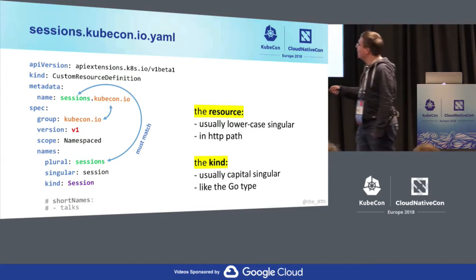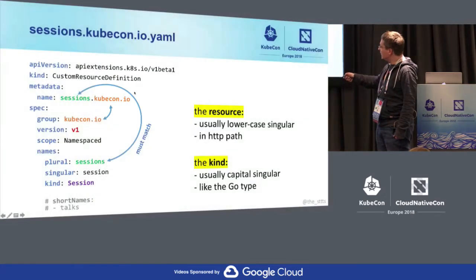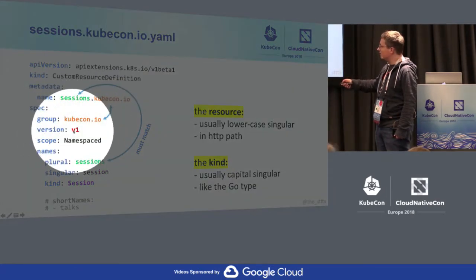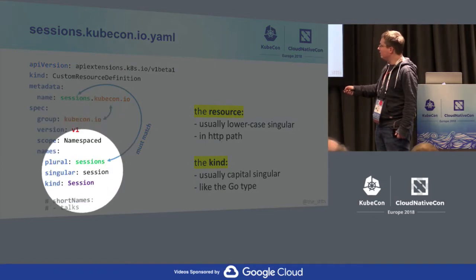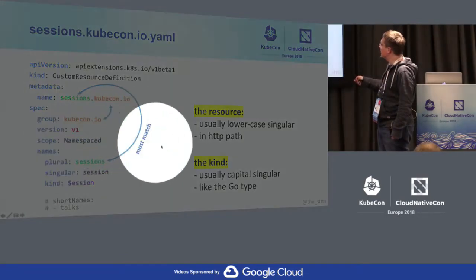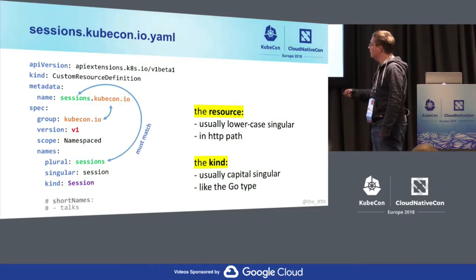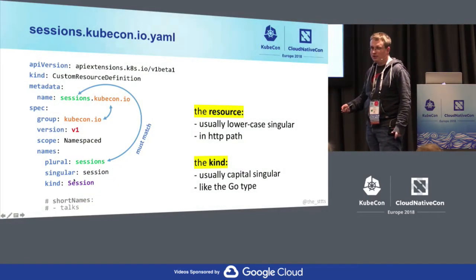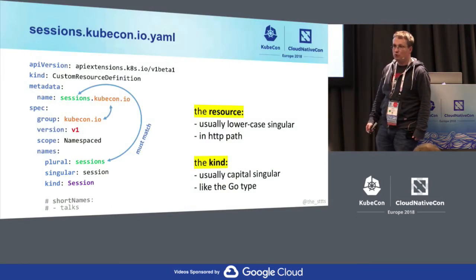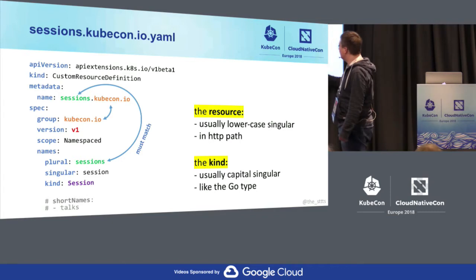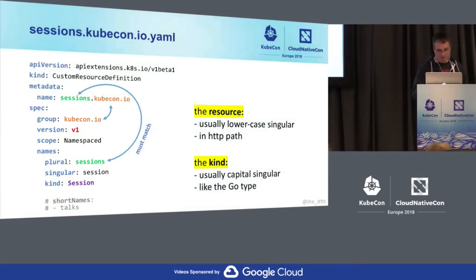The important part is you define a CRD — in this case for sessions, for KubeCon sessions. There's a certain naming scheme: you have to give a group (kubecon.io), a version, whether it's namespaced, and some naming. 'Sessions' is the plural resource — lowercase, what you see in HTTP paths. You can define the singular for kubectl, so you can say 'kubectl get session' without the S. There's also the kind, which is usually uppercase — for Go programmers, that's the Go type in our system. The API group, version, resource, and kind are all identifying.